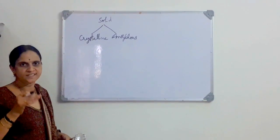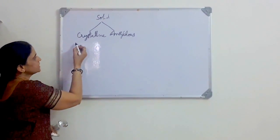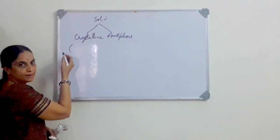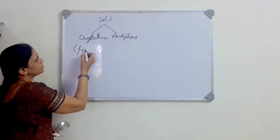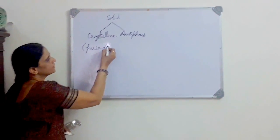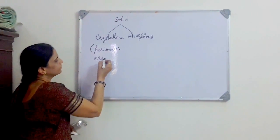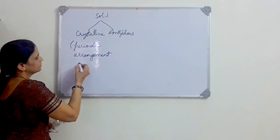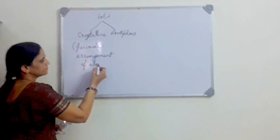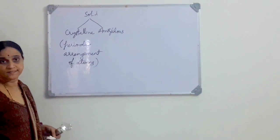Let us know what is a crystalline solid. Crystalline solid is a solid which is made of a periodic pattern of atoms, periodic arrangement of atoms. That is called a crystalline solid.